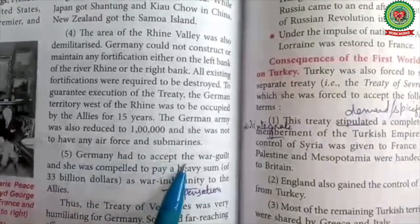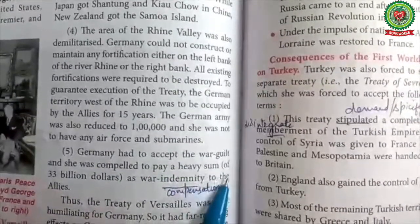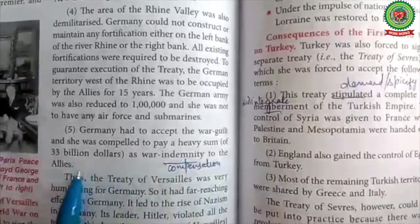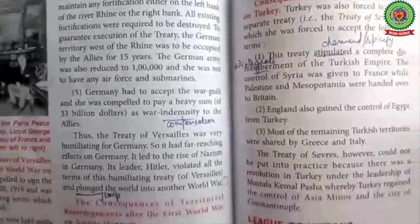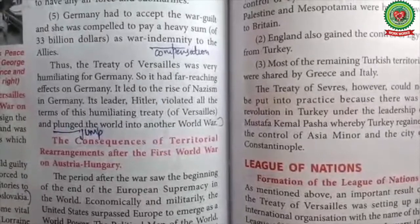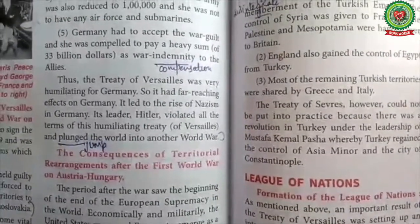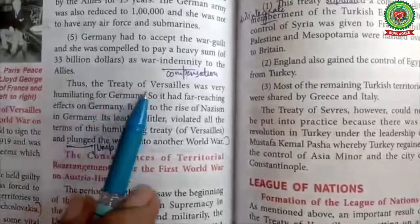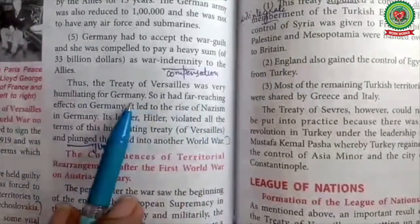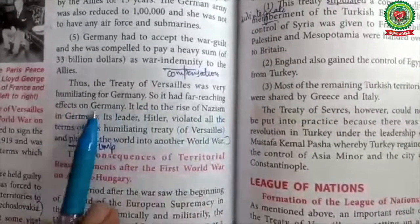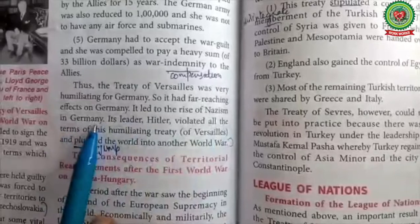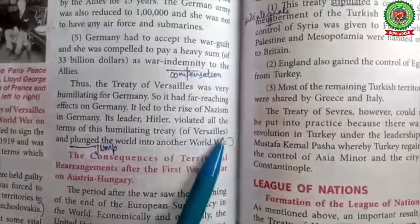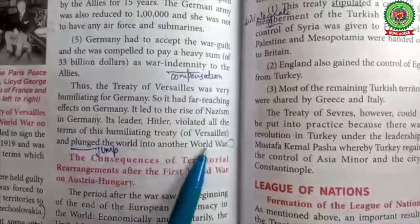Germany had to accept the war guilt and was compelled to pay a heavy sum of 33 billion dollars as war indemnity — meaning compensation — to the allies. These payments were called reparations. Thus, the Treaty of Versailles was very humiliating for Germany and had far-reaching effects. It led to the rise of Nazism in Germany, whose leader Hitler violated all the terms of this humiliating treaty and plunged the world into another world war.